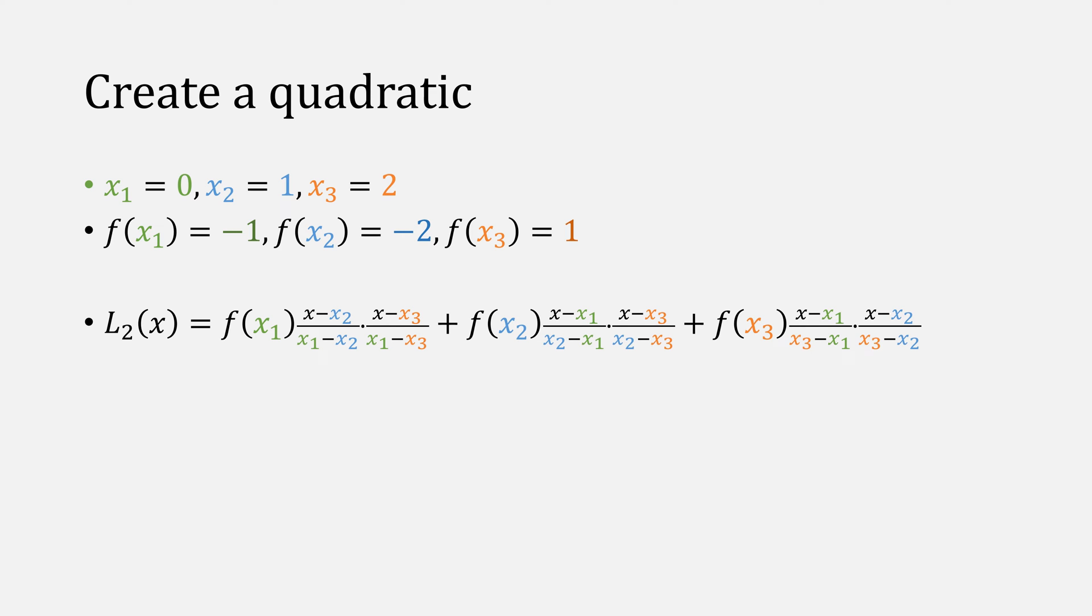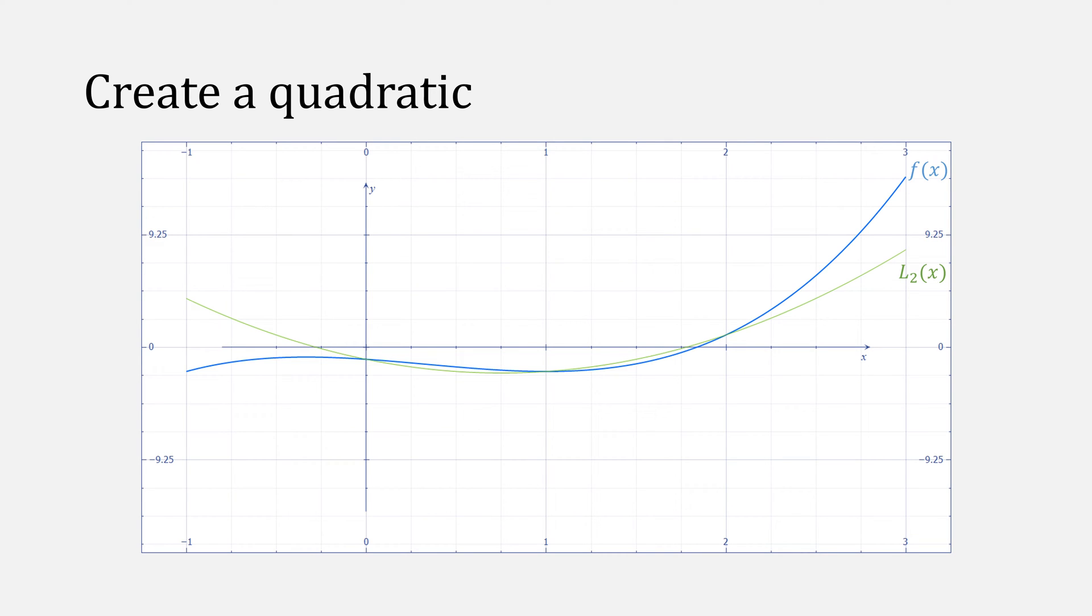I recommend watching my video on Lagrange polynomial if you haven't already. Plug in our numbers to find this function, which we can simplify as 2x squared minus 3x minus 1. So if we graph both of those functions, they should match at those three points, which they do.